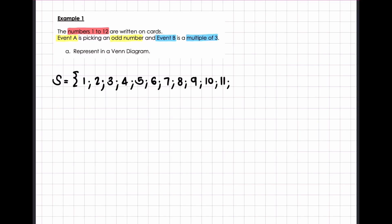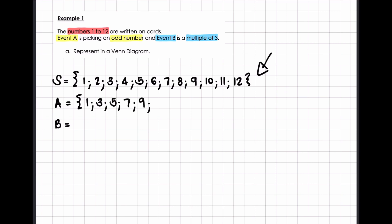I suggest that you write these out with me while I do it so that you can also do it yourself. So we have our sample space, then we have event A and we have event B. Event A — remember with maths, curly brackets, semicolons to list our numbers — is picking an odd number. So our odd numbers from 1 to 12 are 1, 3, 5, 7, 9 and 11.